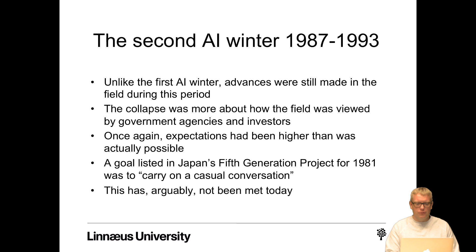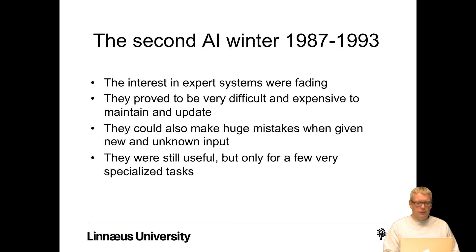Then came the second AI winter from around 1987 to 1993. Unlike the first, advances were still being made during this period — the collapse was more about how the field was viewed by government agencies and investors. Expectations had again been set higher than was achievable. For example, Japan's fifth generation project from 1981 listed carrying on a casual conversation as a goal for that era, and that has arguably not been met even today. Expert systems were also fading, proving very difficult and expensive to maintain and update, making huge mistakes on new unknown input.